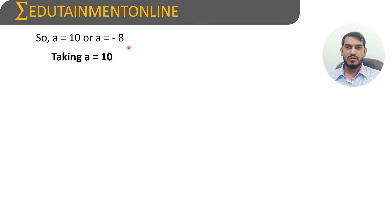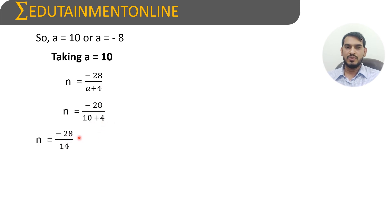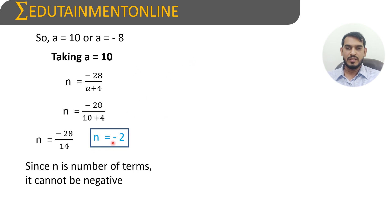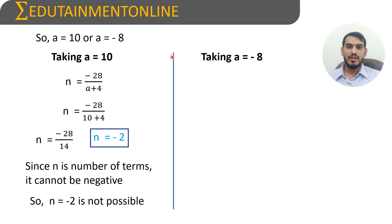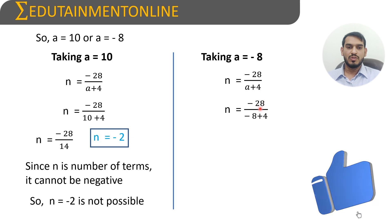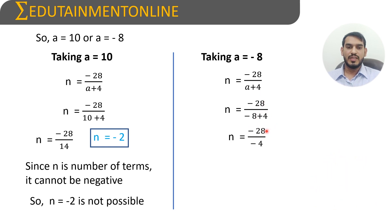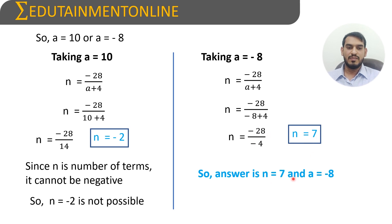We have a equals 10 or a equals minus 8. First, taking a equals 10: n equals minus 28 divided by 10 plus 4 equals minus 28 divided by 14, so n equals minus 2. Since n is the number of terms in an AP, it cannot be negative, so n equals minus 2 is not possible. Taking a equals minus 8: n equals minus 28 divided by minus 8 plus 4 equals minus 28 divided by minus 4, so n equals 7. Therefore, n equals 7 and a equals minus 8.